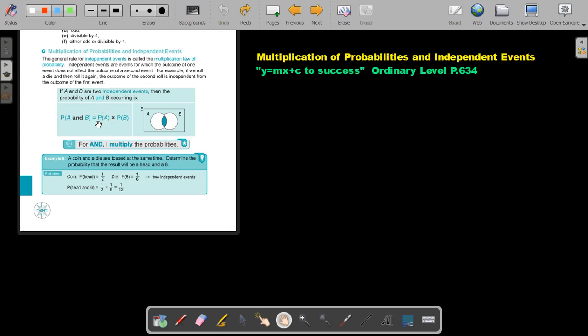then the probability of A and B occurring is probability A times probability B. So basically you just take the probability of the one, you multiply it with the other one, and that is the result that you want. Okay, so for 'and' I multiply the probabilities. Let's look at an example.